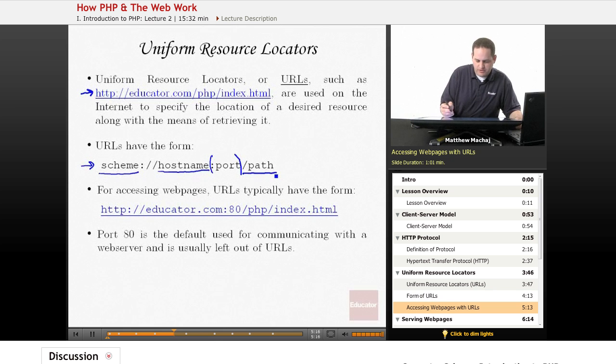So for accessing web pages, URLs typically have the form shown here. For the scheme, it has, as we saw in the last slide, the HTTP specified. And that specifies that you should use the HTTP protocol to load a particular resource on the web. In this case, the resource is a file called index.html. And then index.html is located in the PHP directory on the server, educator.com. And the way that you connect to that server at educator.com is using port 80.